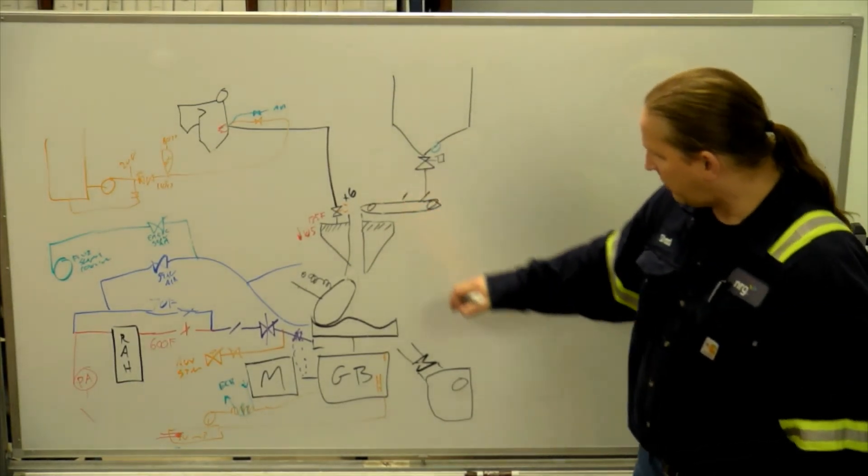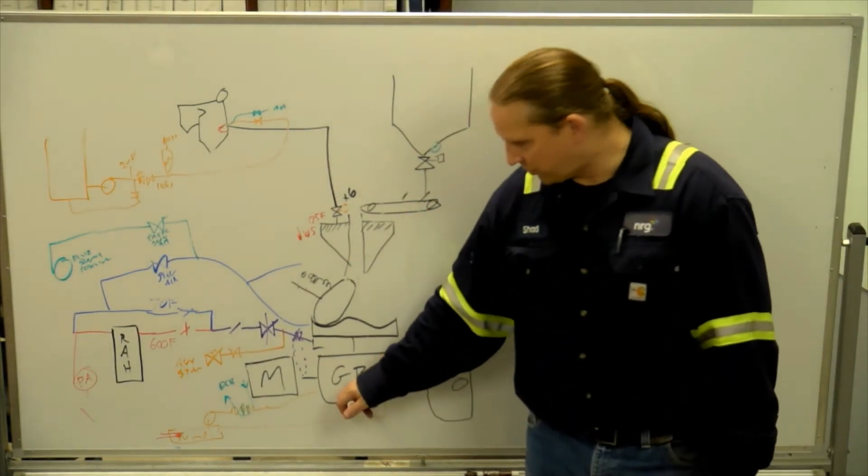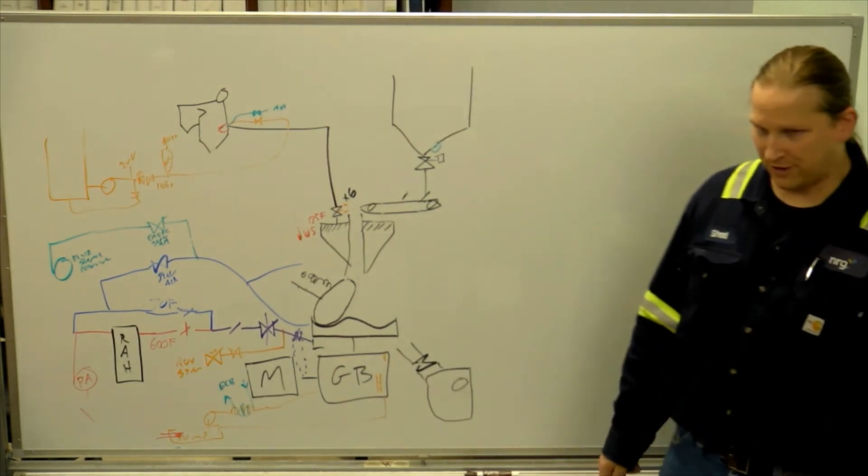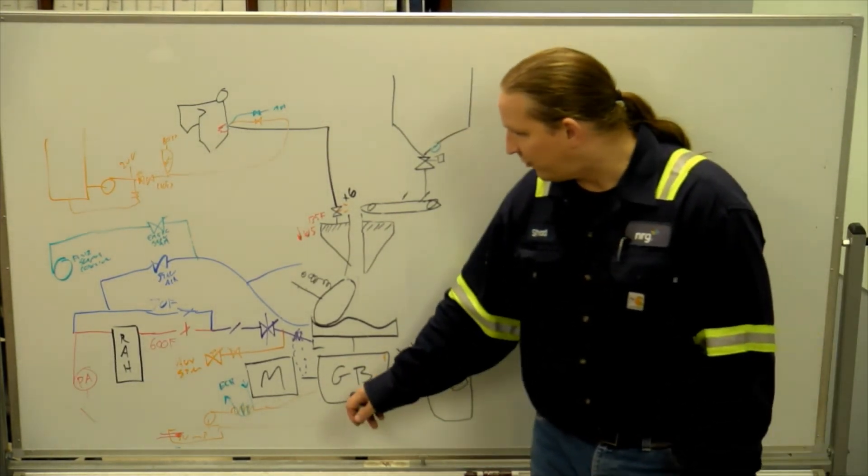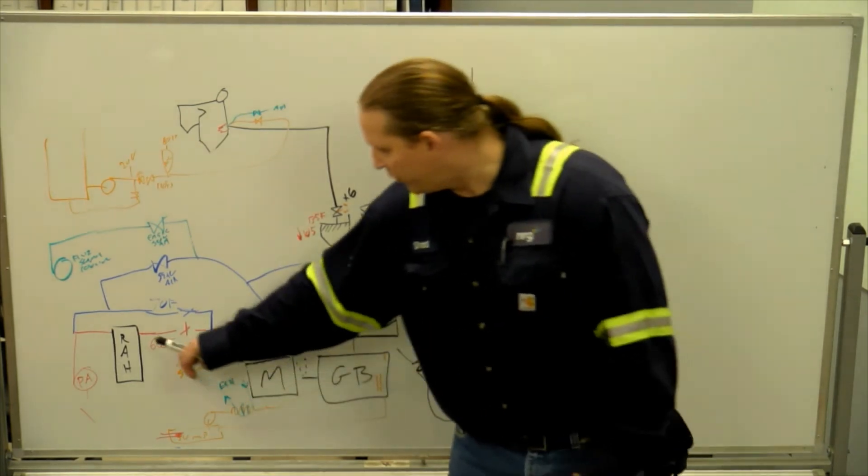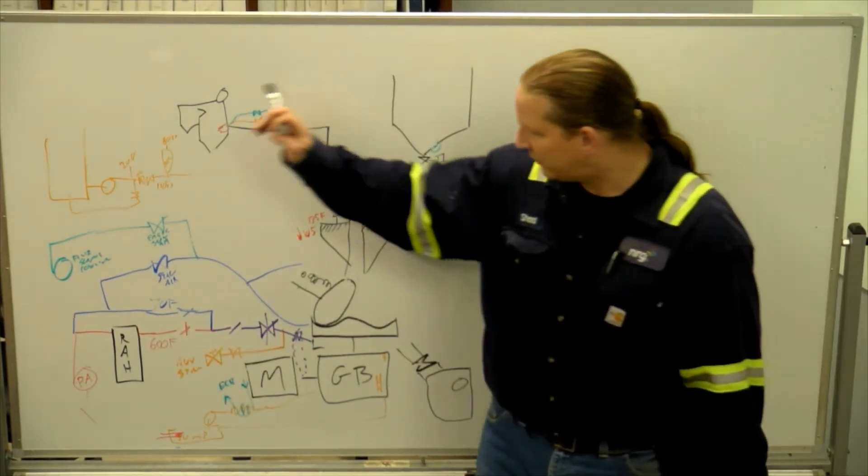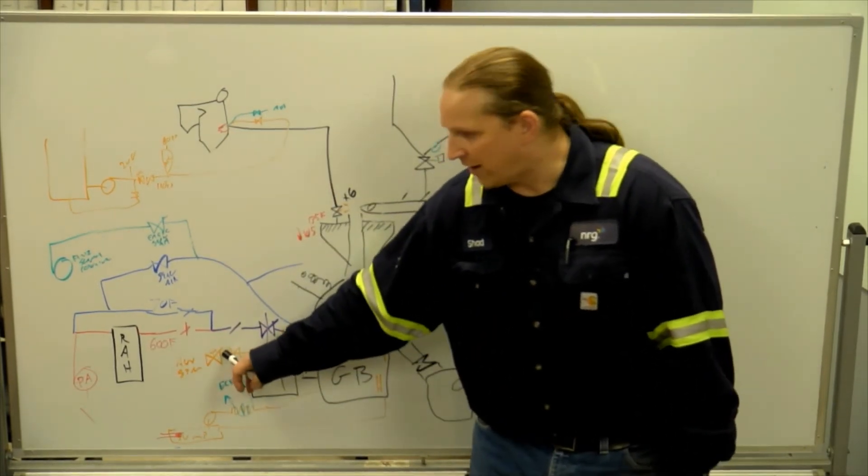After the feeder shuts off, the motor on the mill runs for another 5 minutes. And, then it shuts off. And, then we continue to blow air through it for another 10. Somewhere in there, ox steam came on. I don't remember.